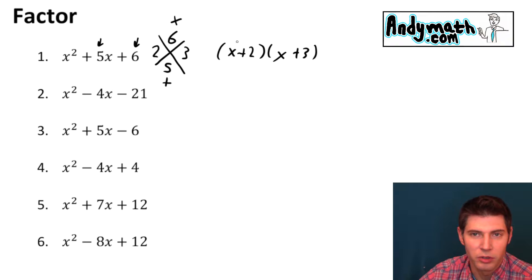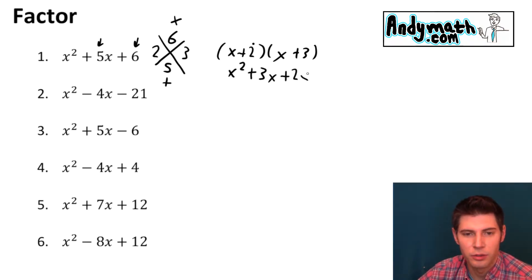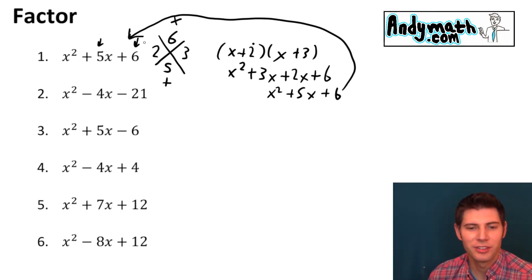To double check our work you could FOIL it. So x times x is x squared. x times 3 is 3x. 2 times x is 2x. And 2 times 3 is 6. Combine like terms and we get x squared plus 5x plus 6 which brings us back to where we started. So we know that we factored it correctly. So let's do five more of these just to practice together and then that'll be it.